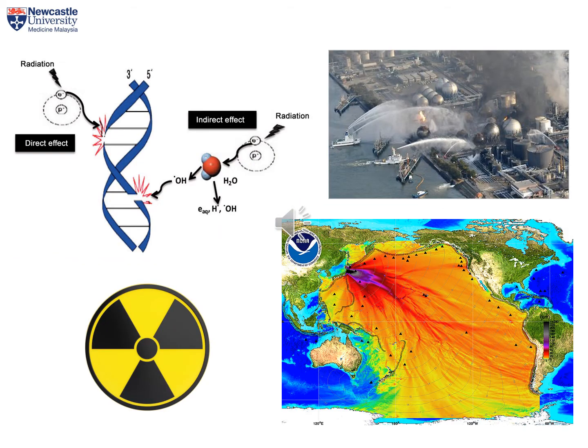This diagram shows the effect of radiation on DNA. Radiation like UV can directly create a break in the DNA molecule, or sometimes it can indirectly create free radical molecules from water that can later damage the DNA. Shown on the right hand side is the Fukushima nuclear disaster, where the radiation spread across the Pacific Ocean.